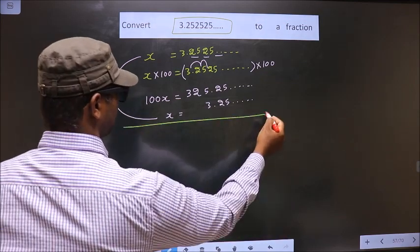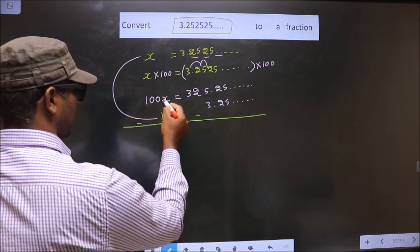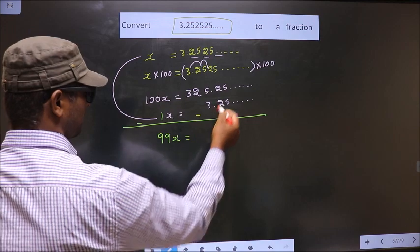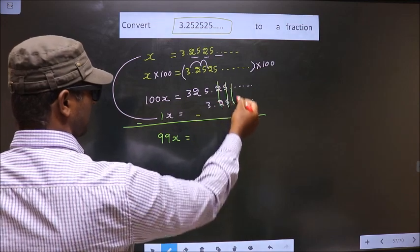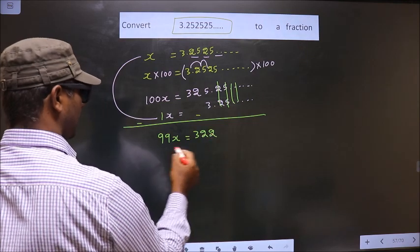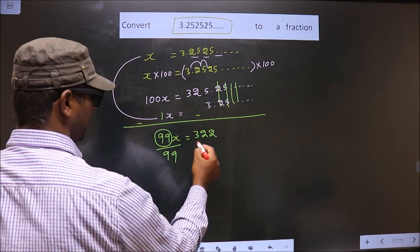Now we should subtract these two, so minus minus: 100x minus 1x is 99x equals - here all this cancels out - 325 minus 3 is 322. Now you should remove 99, so you divide by 99.